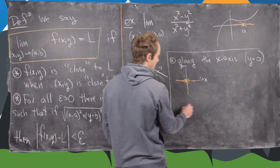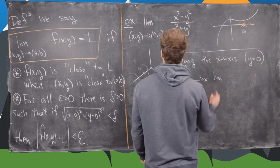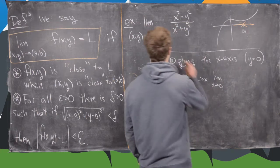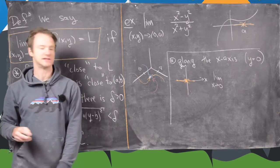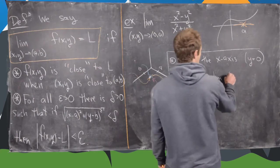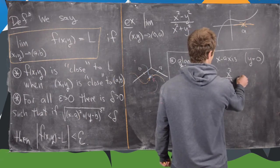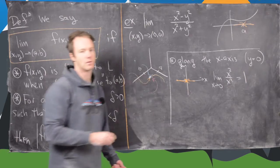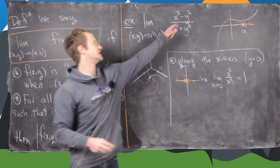So our limit turns into the limit as x approaches zero of x squared over x squared, but that limit is obviously one.